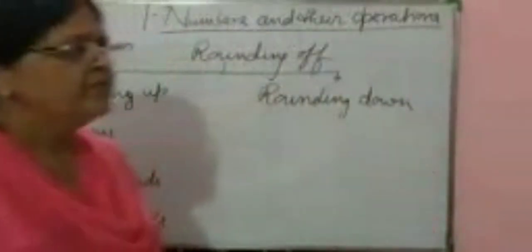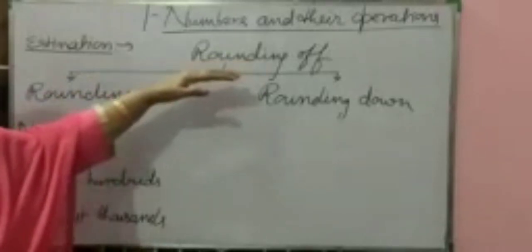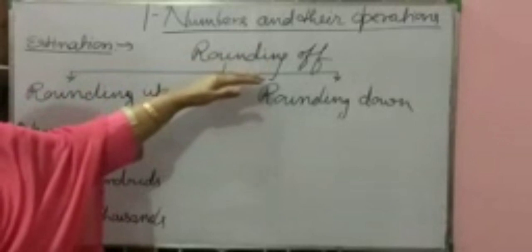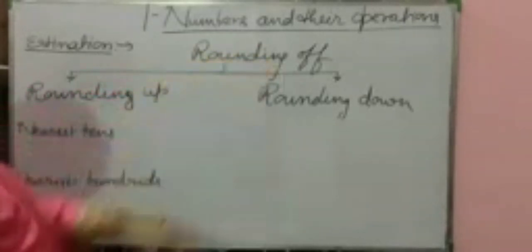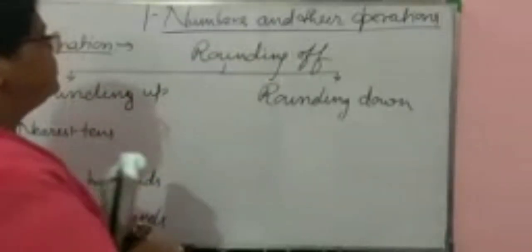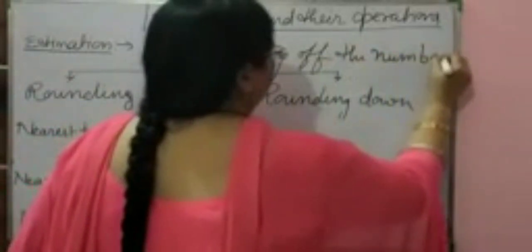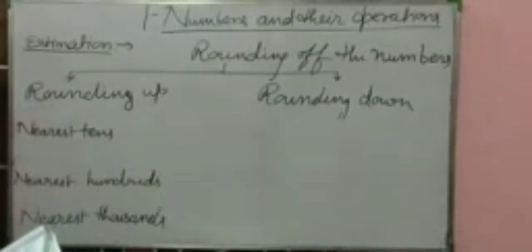We will start from rounding off. Rounding off numbers can be done in two ways: rounding up and rounding down.